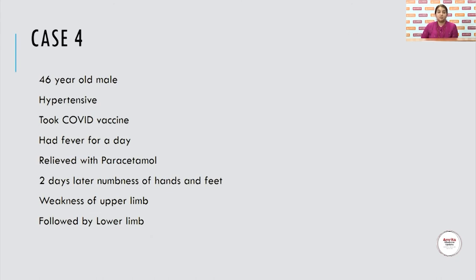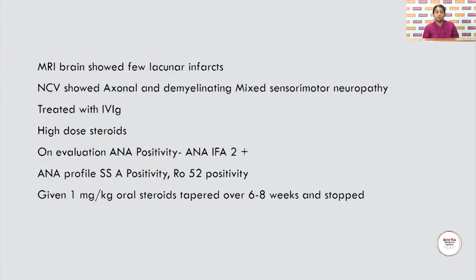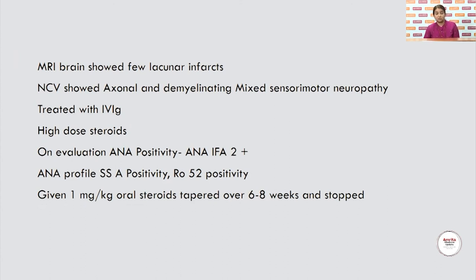Case 4: A 46-year-old male, hypertensive, took the Covishield COVID vaccine, had fever for a day relieved with paracetamol. Two days later, he developed numbness of hands and feet, weakness of upper limb followed by lower limb. MRI brain showed a few lacunar infarcts. NCV showed axonal and demyelinating mixed sensory-motor neuropathy — an atypical GBS or acute motor-sensory neuropathy. He was treated with IVIG and high-dose steroids. On further evaluation, he was found to be ANA positive IFA 2+ with SSA and Ro52 positivity. He was given 1 mg/kg oral steroids tapered over 6 to 8 weeks. He recovered well. Whether this will progress to chronic autoimmunity is unknown — this was vaccine-induced.